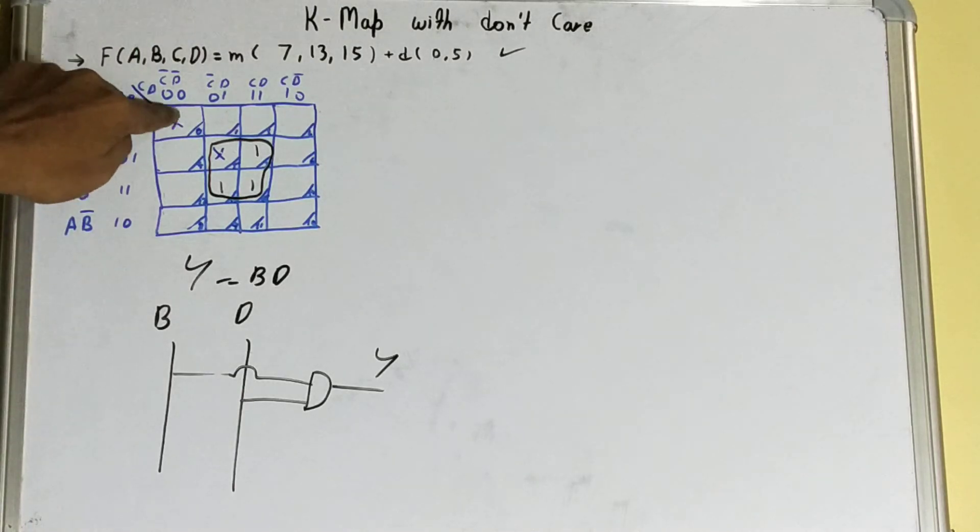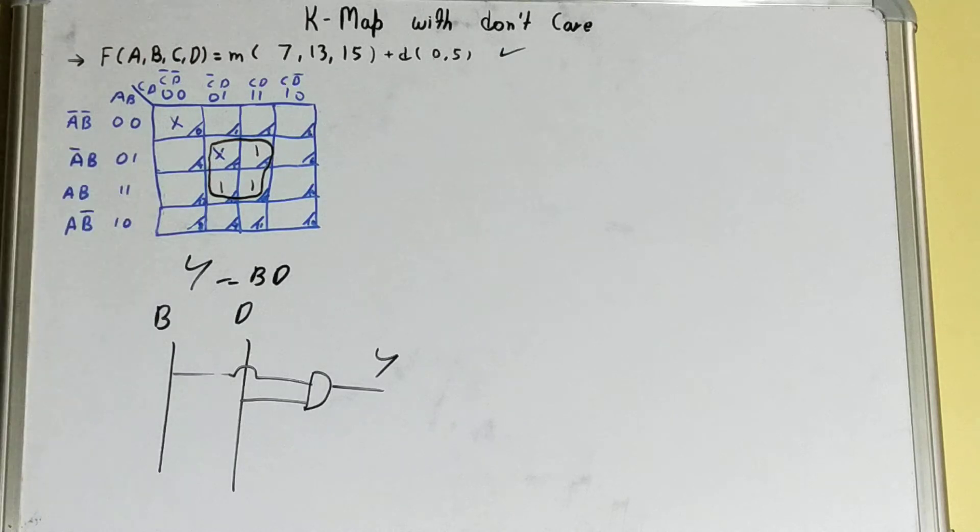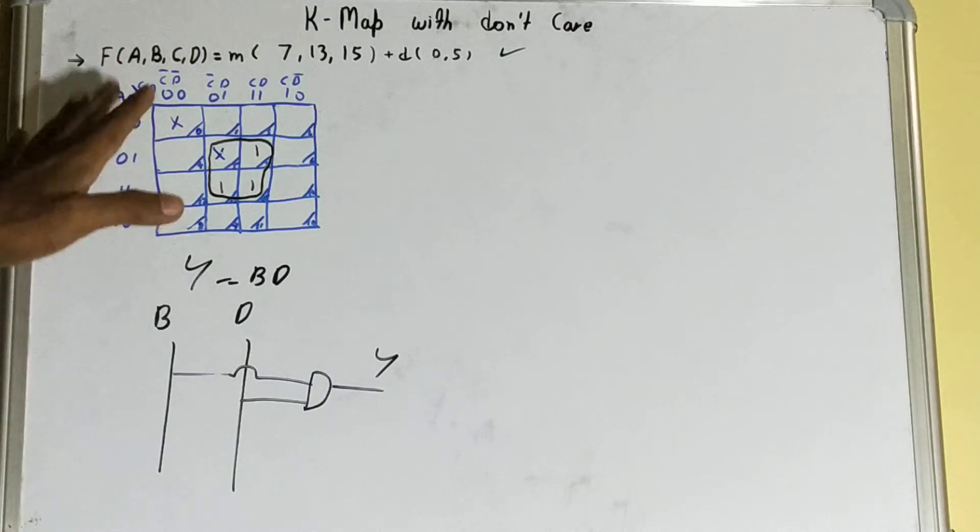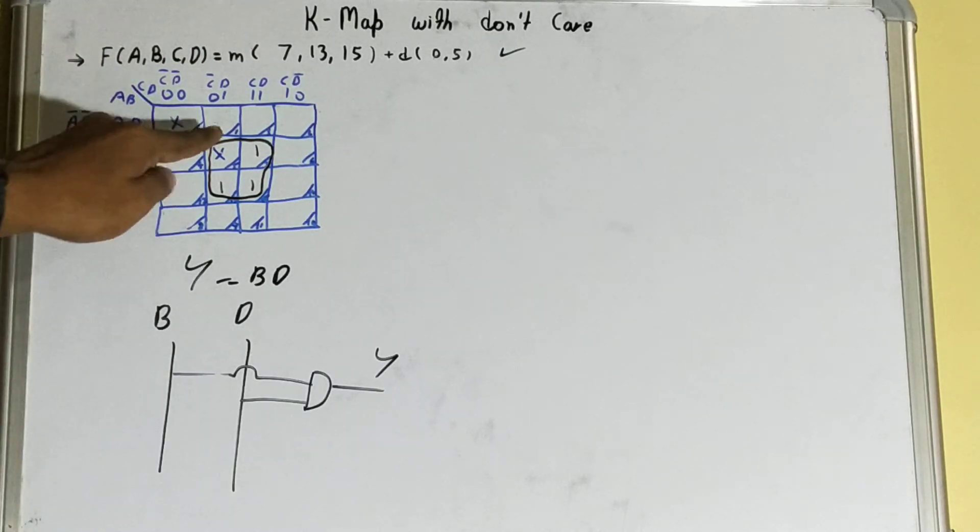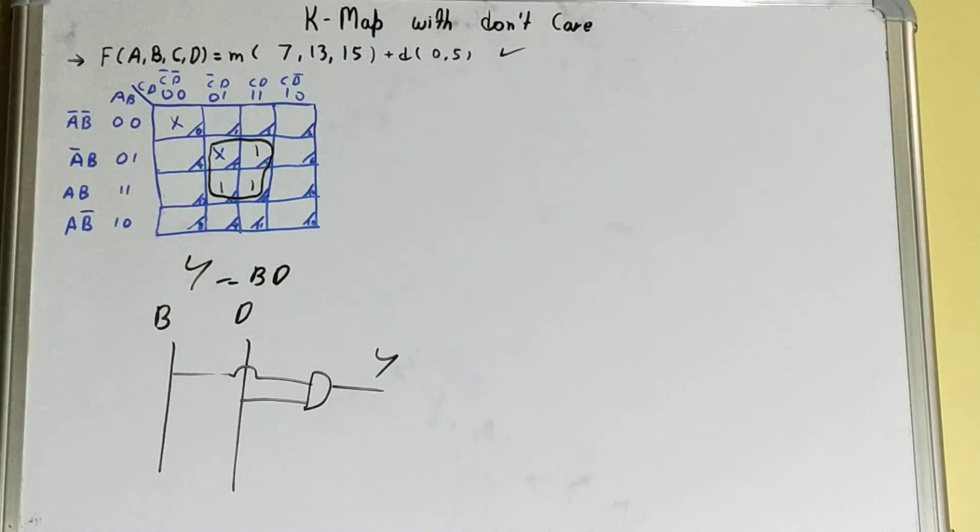That is your pair, octet, or quad. If it doesn't come, you have to ignore it. If it comes inside, then you can create a quad and consider it. So that was the basic concept for your don't care.